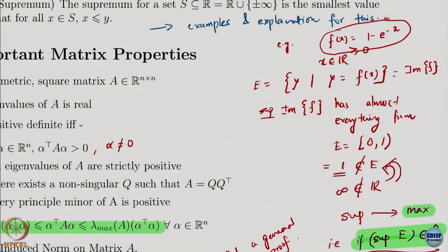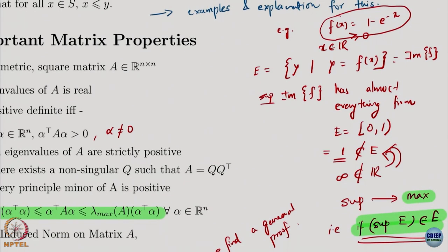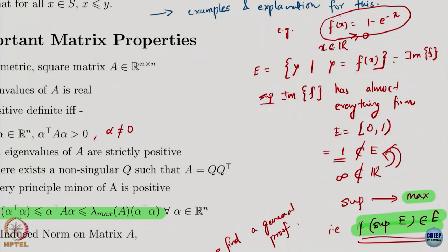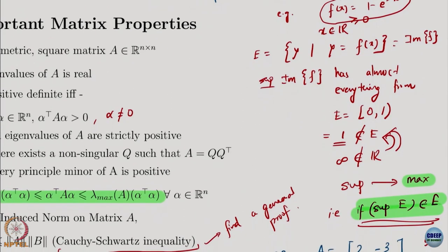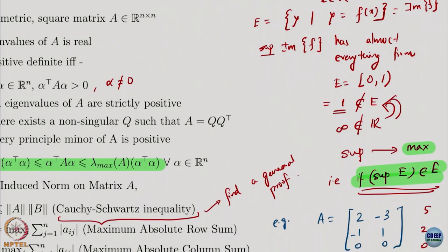Let us look at another example — it is a set created from the image of a function. If I look at the function f(x) = 1 minus e to the minus x, where x is non-negative real numbers, and I look at the set E which is the image of f. The image of f is all the values that f takes. So the supremum is 1, but it is not contained in E. When the supremum is contained in the set, you can replace the sup notation with the max notation.